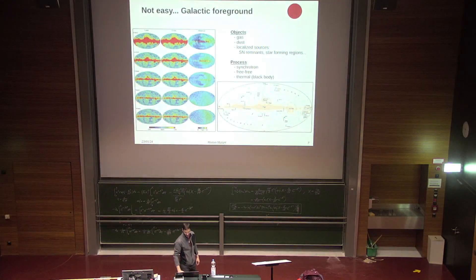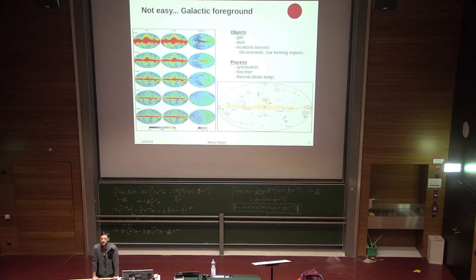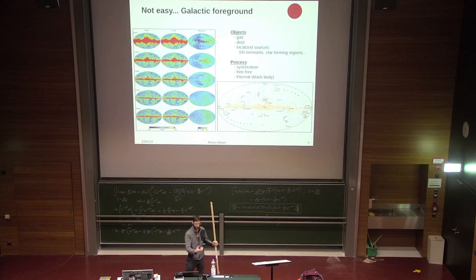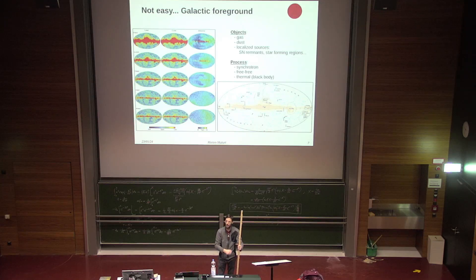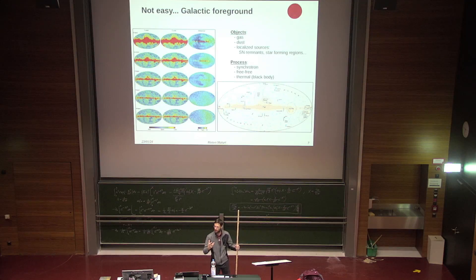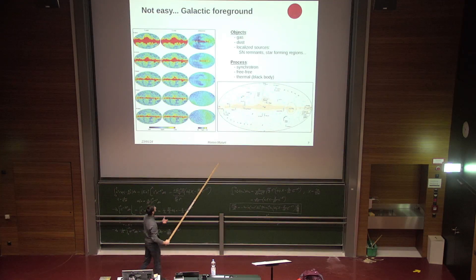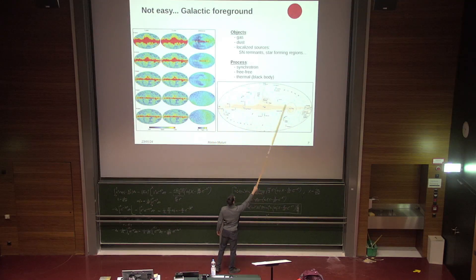Now let's see how difficult it is to observe the CMB. We live in a galaxy, and our own galaxy is full of gas doing nasty things — emitting radiation in the millimeter regime, exactly where we want to observe the CMB. There is dust, and dust emits a blackbody or gray-body spectrum, because we have dust grains at different temperatures whose superposition of blackbody spectra gives a gray spectrum — it's thermal emission.